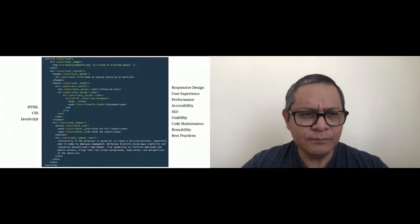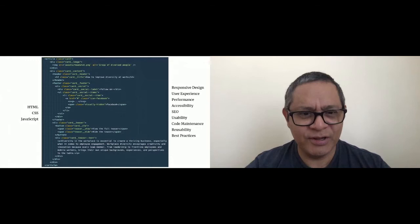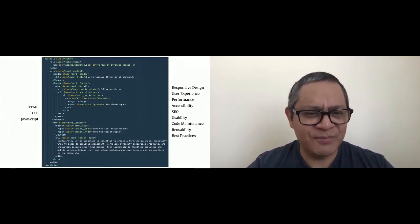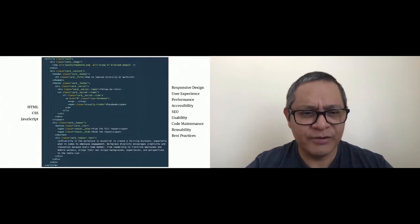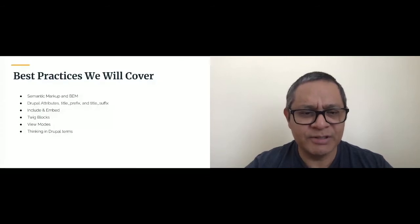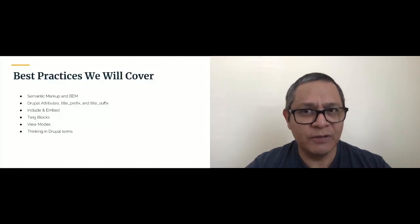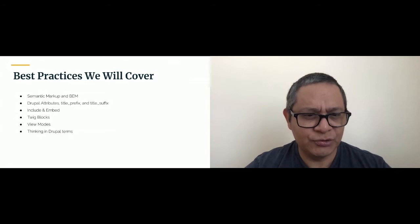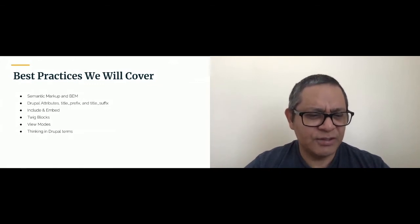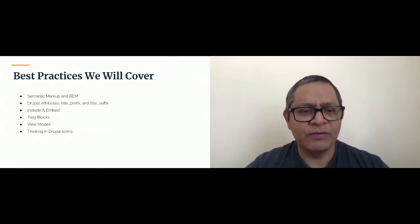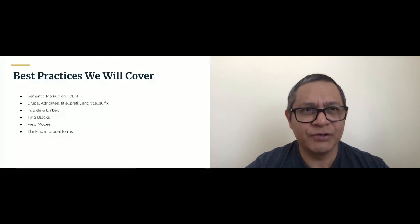We're going to build the component using some best practices: semantic markup and BEM (Block Element Modifier) for naming CSS classes in a way that shows relationships. When building components for Drupal — even if you're doing it in Pattern Lab or another design system — you need to account for things like Drupal attributes, title prefix, and title suffix, and you'll see how that affects rendering. Includes, embeds, Twig blocks, and view modes are all important to keep in mind. Don't just focus on Pattern Lab and ignore Drupal — think about it early.